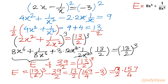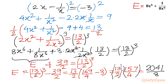So E = (13/2) · (157/4) = 13 × 157 / 8 = 2041/8. This is our final answer: the expression equals 2041 divided by 8.